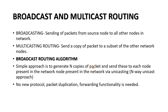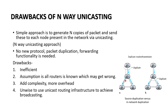The first broadcasting routing algorithm is n-way unicasting. In n-way unicasting, we make n copies of a packet and send it to all other n nodes. This is a simple approach where we generate n copies of a packet and send these to each node in the network. No new protocol is needed, but there is a possibility of packet duplication and forwarding overhead. As shown in this diagram, if we want to send n copies from r1 to all other nodes, this link will get overused and there will be huge traffic, slowing down the network.